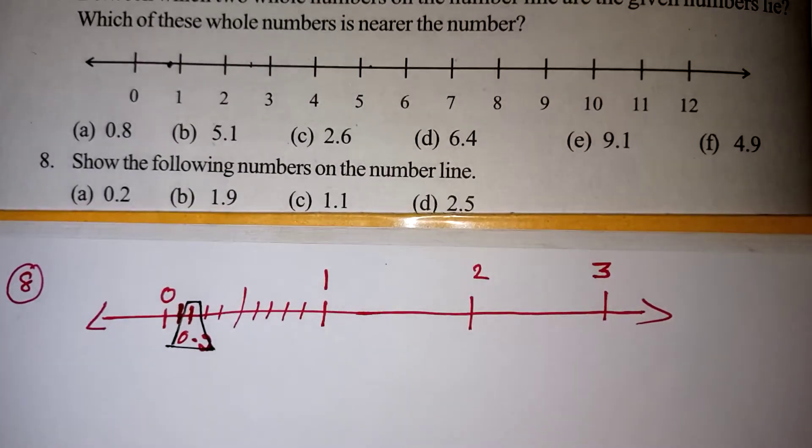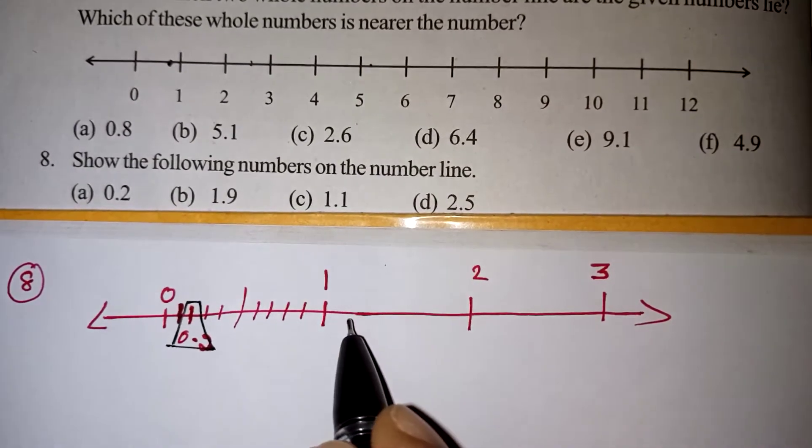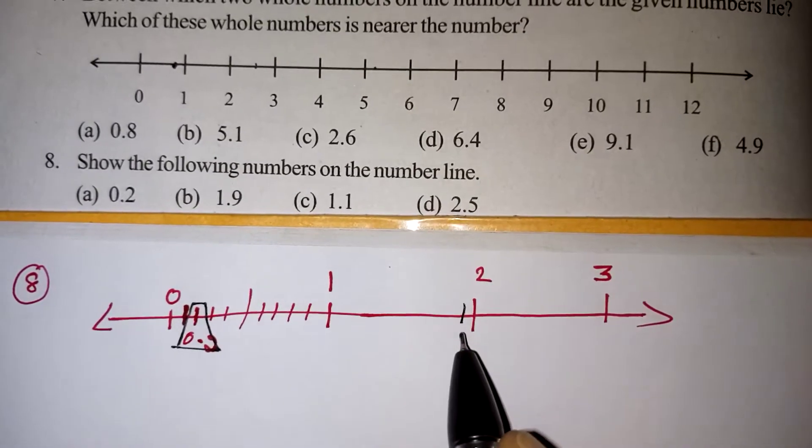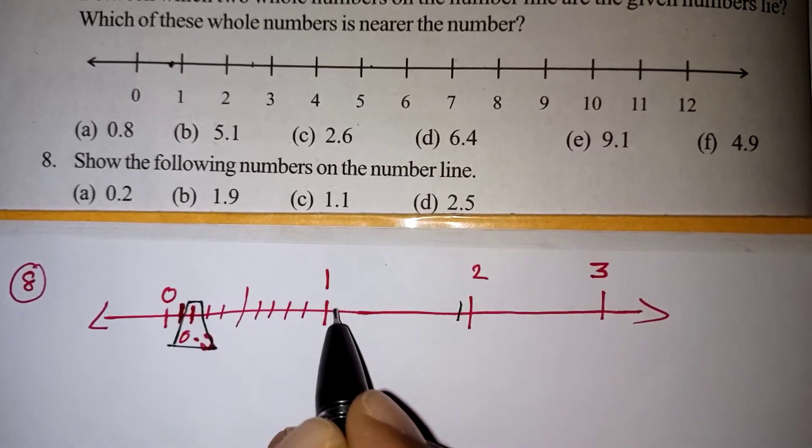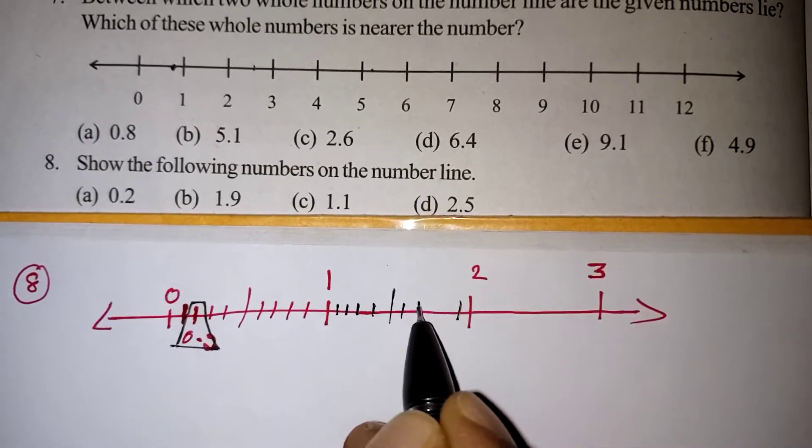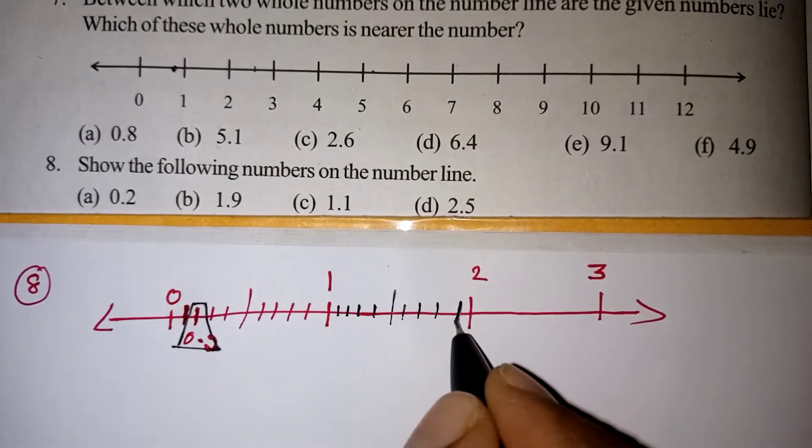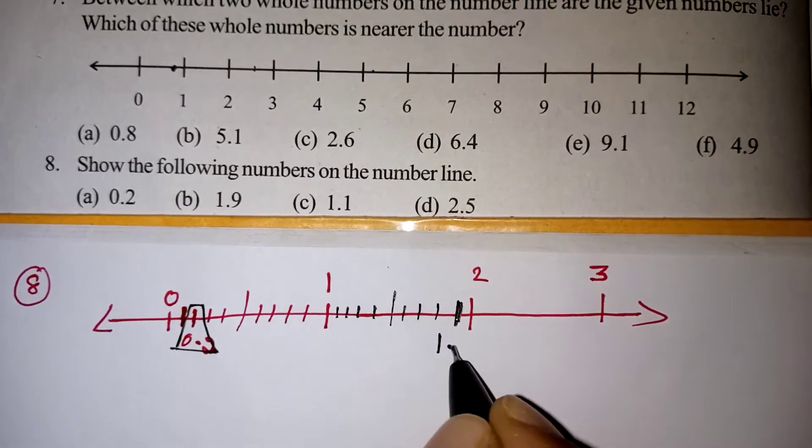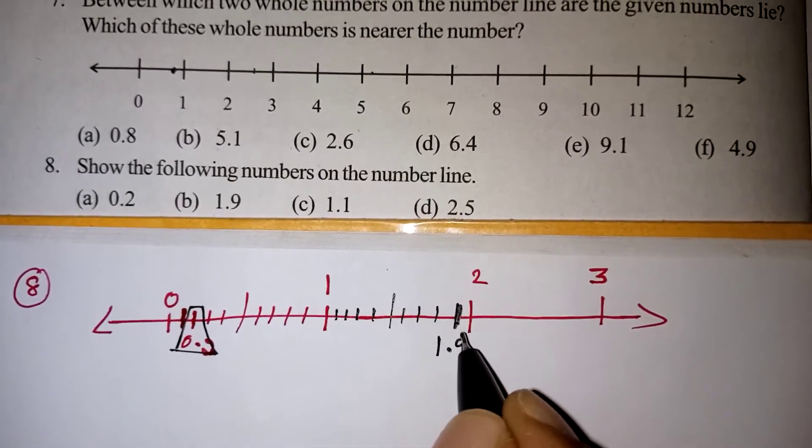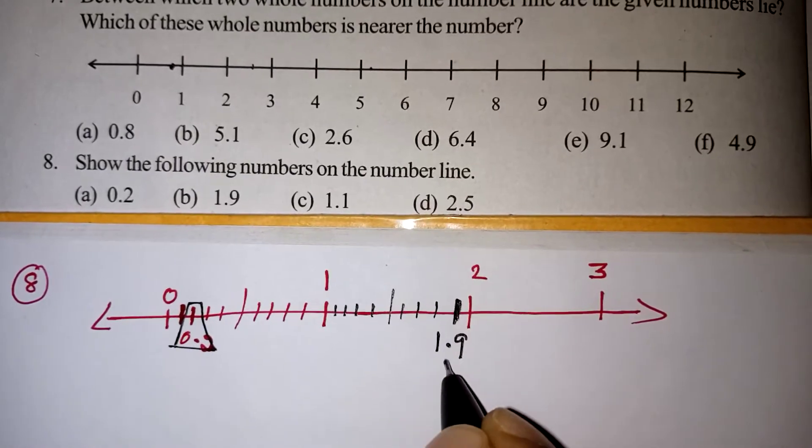Next one is 1.9. After 1, we have to go 9 lines, or before 2, we can take the first line. It is called 1.9. So 1.1, 2, 3, 4, 5, 6, 7, 8, 9. This value is 1.9. You can go from 1 or less than 2, it will be only one digit back, that is 1.9.